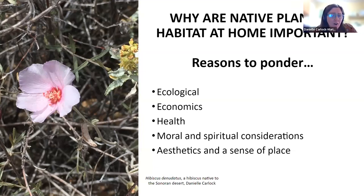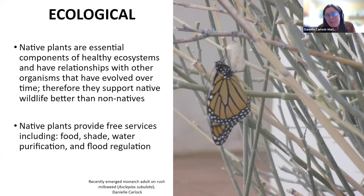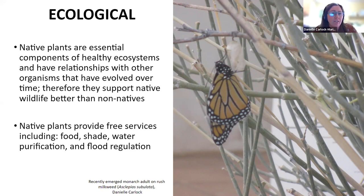The five considerations are ecological, economic, health, moral and spiritual, and aesthetics and sense of place. Native plants are essential components of healthy ecosystems. They have relationships with the microorganisms in their ecosystem, the insects, the birds, the mammals, and the people in those ecosystems. Because of these long periods of interrelationships and evolution, native plants will generally support wildlife better than non-natives.